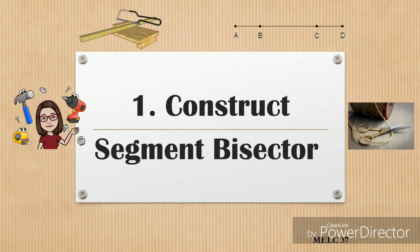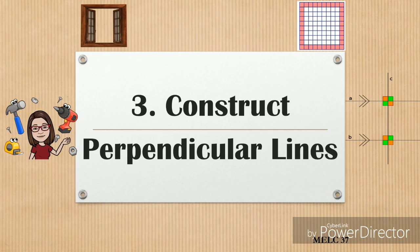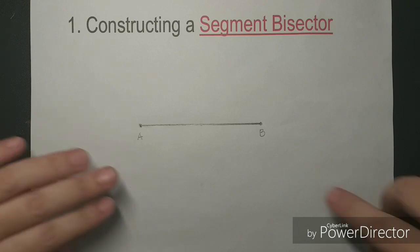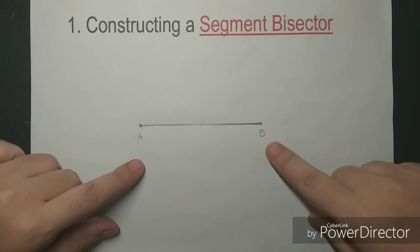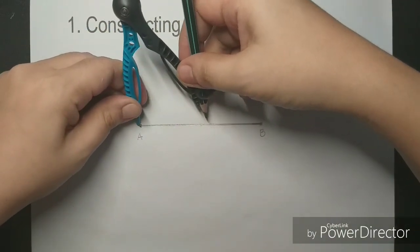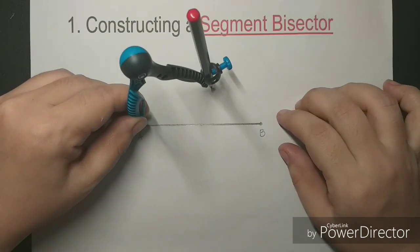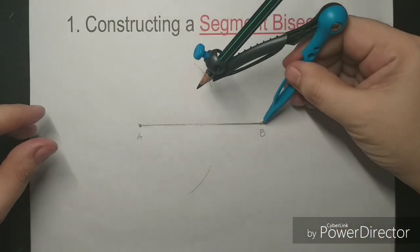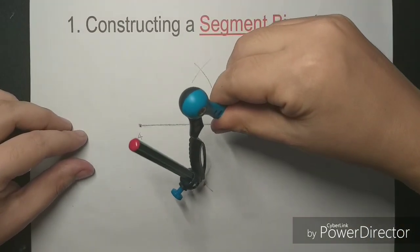Let's now construct a segment bisector. We are given here a line segment AB with points A and B as the endpoints. Now, using the compass with A as the center, let's make a radius that is greater than half of AB, and create an arc above and below the line segment AB. Using the same radius with B as the center, let's create an arc above and below the line segment AB also.